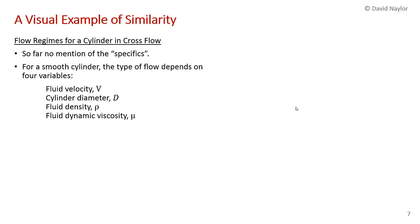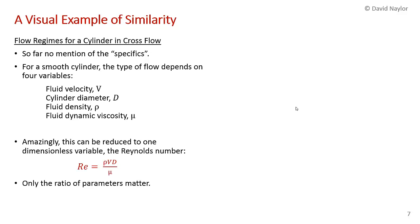You'll notice in this discussion of flow regimes for a cylinder in cross flow that I've not mentioned any of the specifics—not the fluid velocity, the particular diameter, the density, or viscosity. But amazingly, we can show in this chapter that this problem can be reduced to one dimensional parameter called the Reynolds number. It's only the ratio of those parameters—density, velocity, diameter divided by viscosity—that matters in determining the flow.